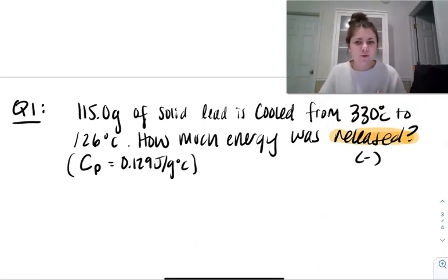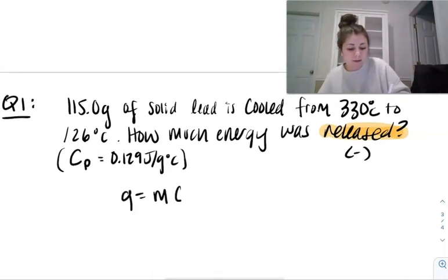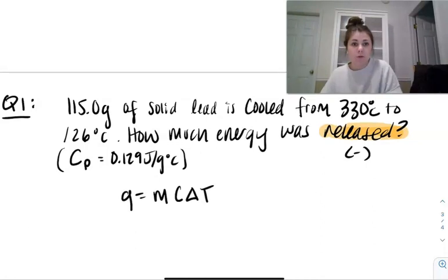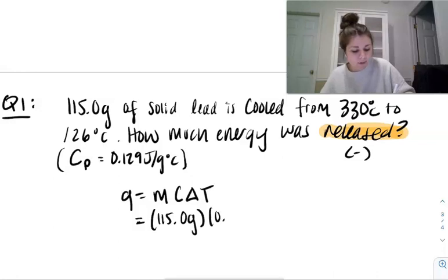But again, if you want to pause the video and try this out for yourself, please do. All right. So assuming that you tried the video, the fact that we have temperature involved, this tells me that we're going to be using this equation rather than the other one. So here, also one way to remember this is I think of MCAT. Like the MCAT exam that helps you remember the equation. Let's solve for it. So here, mass is 115 grams. The heat capacity is 0.129 joules per gram Celsius. And then delta T will be 126 minus 330.